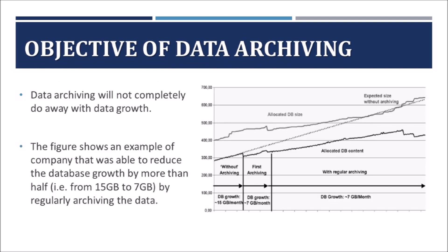Now let us see the major objective of data archiving. Data archiving will not completely do away with the database growth — it helps to control the database growth. As clearly depicted in the picture, the average growth of a company's database is 15 GB without archiving. When archiving starts, the database growth is reduced to 7 GB, and with regular archiving, monthly database growth is 7 GB only. Hence, with archiving, the database growth is under control — this is the major objective of data archiving.